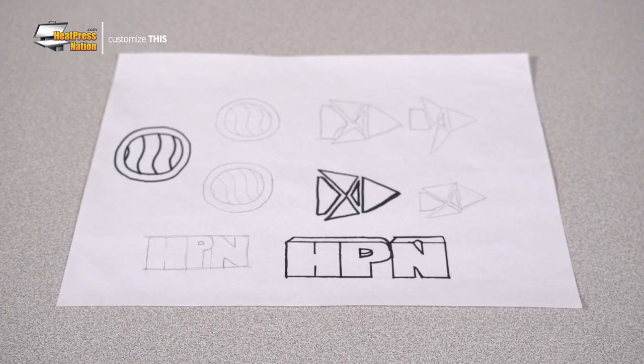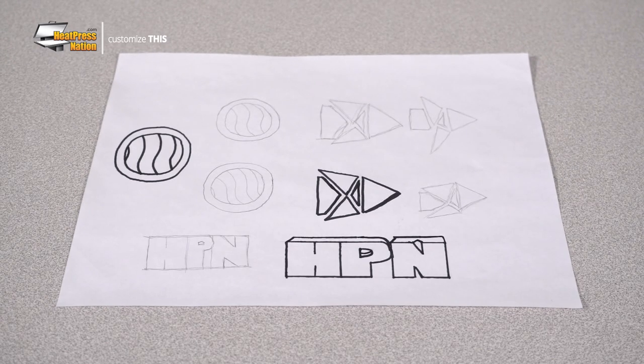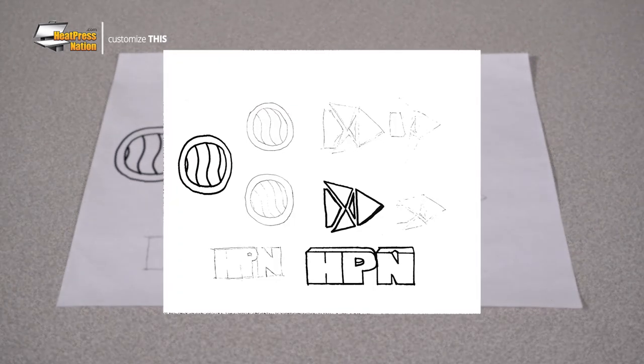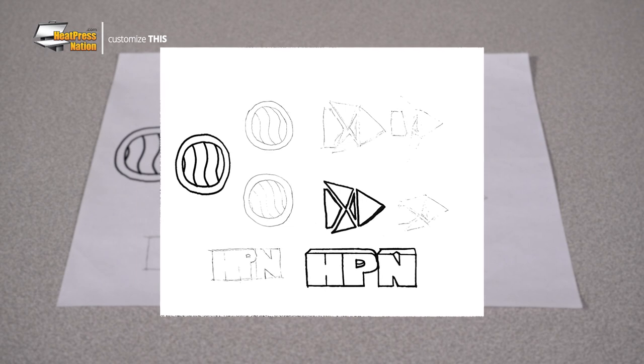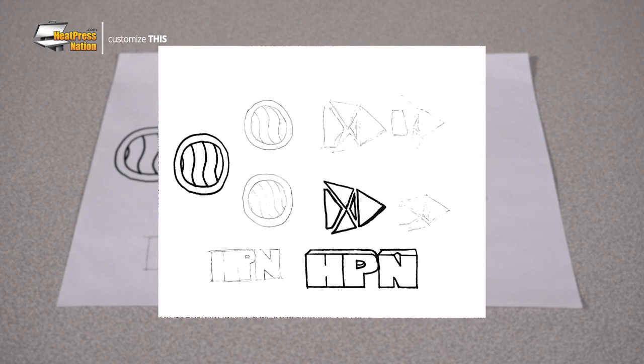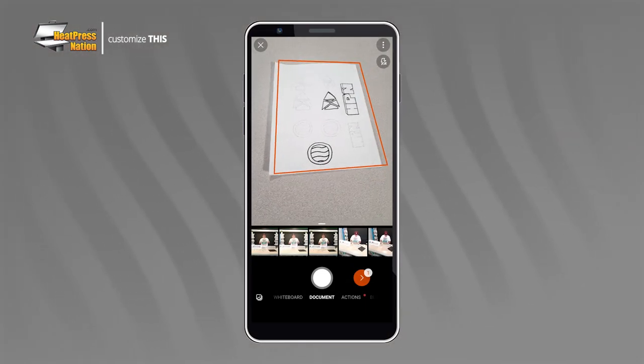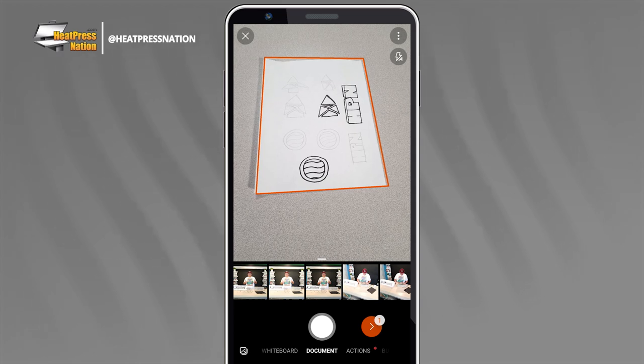Since we'll be sourcing our image from a physical medium, you'll first want to scan the drawing to an image file for your computer. You can either use a dedicated scanner or use a scanning app on your phone or tablet to do so. High contrast images are still recommended for this process, so you'll want to make sure the drawing has dark outlines, which pens or markers can easily provide.